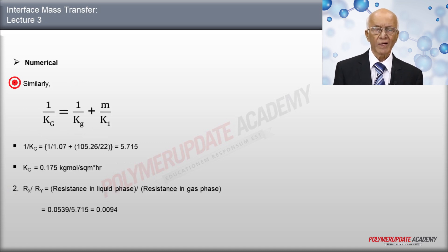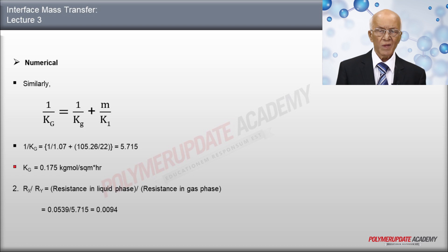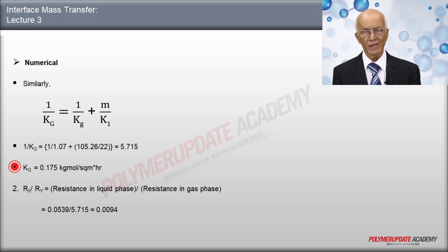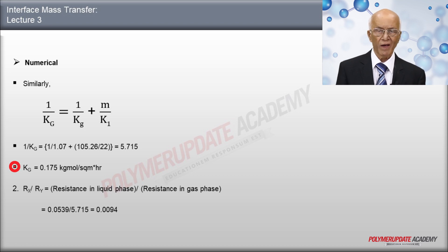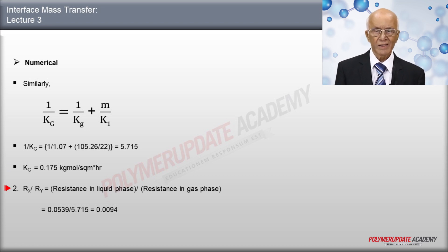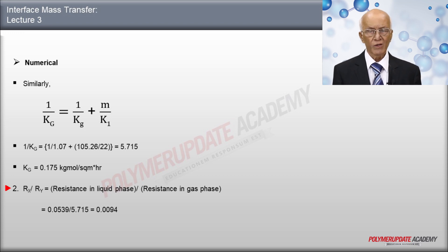Similarly, 1 over capital KG equals 1 over small kg plus M divided by small kL: 1 over KG equals 1 divided by 1.07 plus 105.26 divided by 22, giving 5.715. Therefore, capital KG equals 0.175 kg-mole per square meter per hour. For question 2, the resistance in the liquid phase divided by resistance in the gas phase — Rx over Ry — equals 0.0539 divided by 5.715, which equals 0.0094.